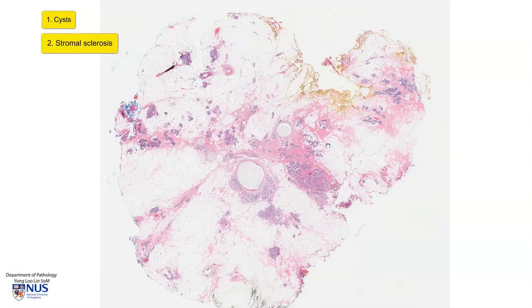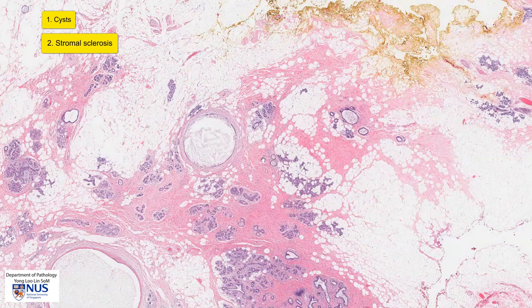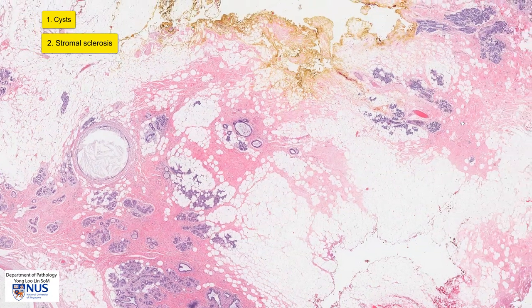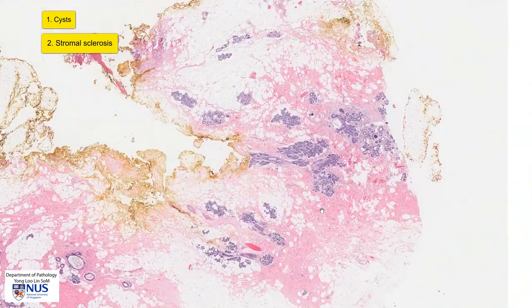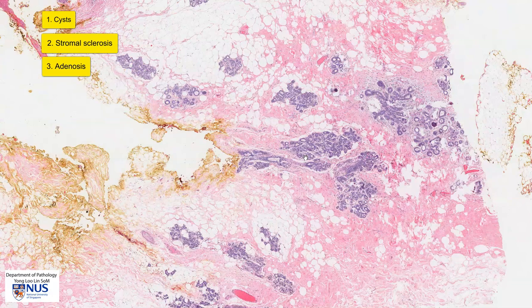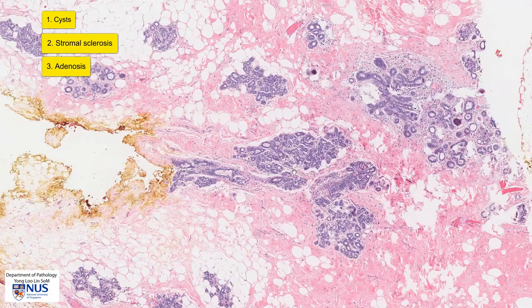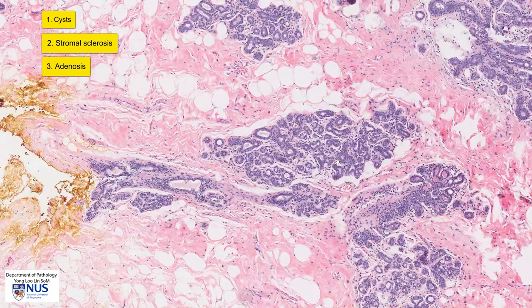The second component is stromal sclerosis, seen in these pink areas of collagen within the stroma. This stromal sclerosis contributes to the firmness of these lesions on palpation. There may also be areas of adenosis, as you can see here. Adenosis is defined as an increase in the number of acini within a lobule.